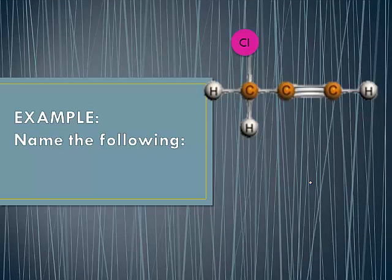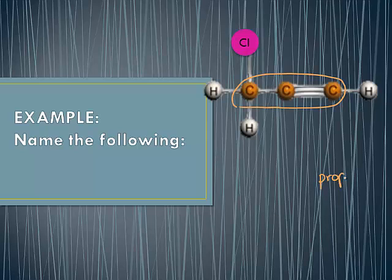Let's look at this example. Just like when we named alkanes, it's important that the longest possible carbon chain must contain the multiple bond. In this particular case, we're going to choose this longest chain. The chain has three carbons in it, so we know that this is a prop-. We have two choices in terms of numbering: I can number from the left, giving the lowest possible number to the chlorine, going one, two, three. Or I can start numbering on the right and give the lowest possible number to the triple bond.